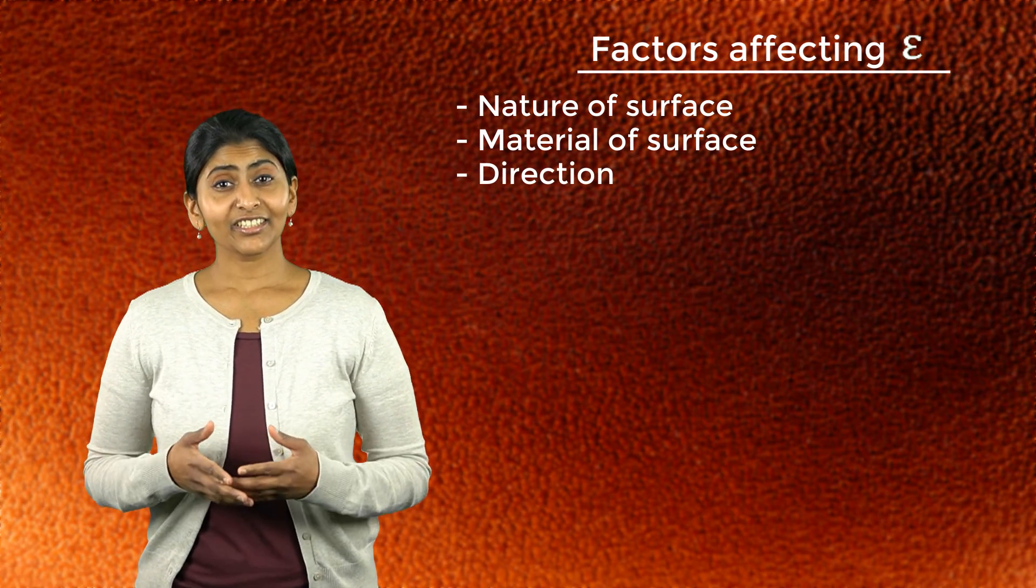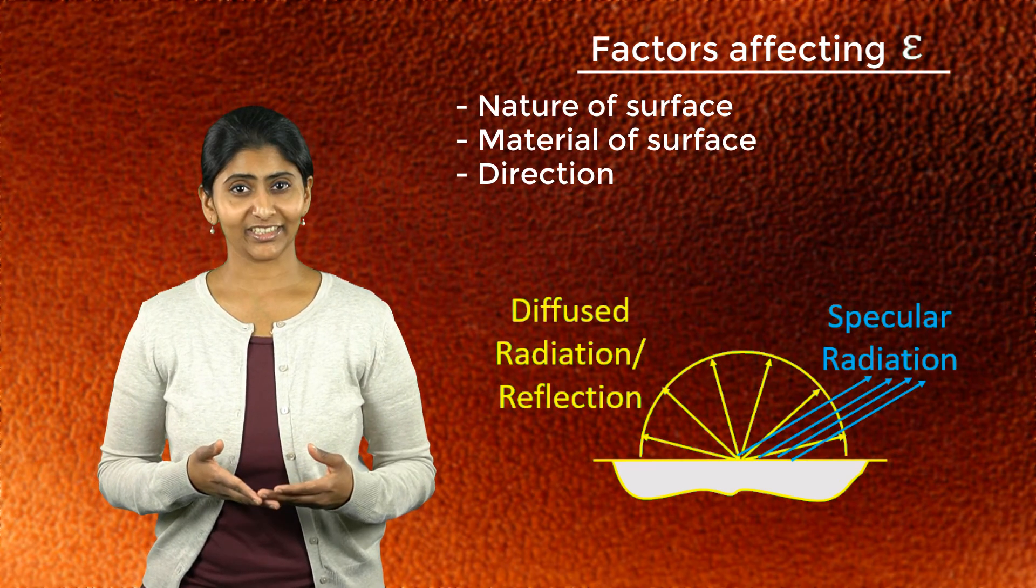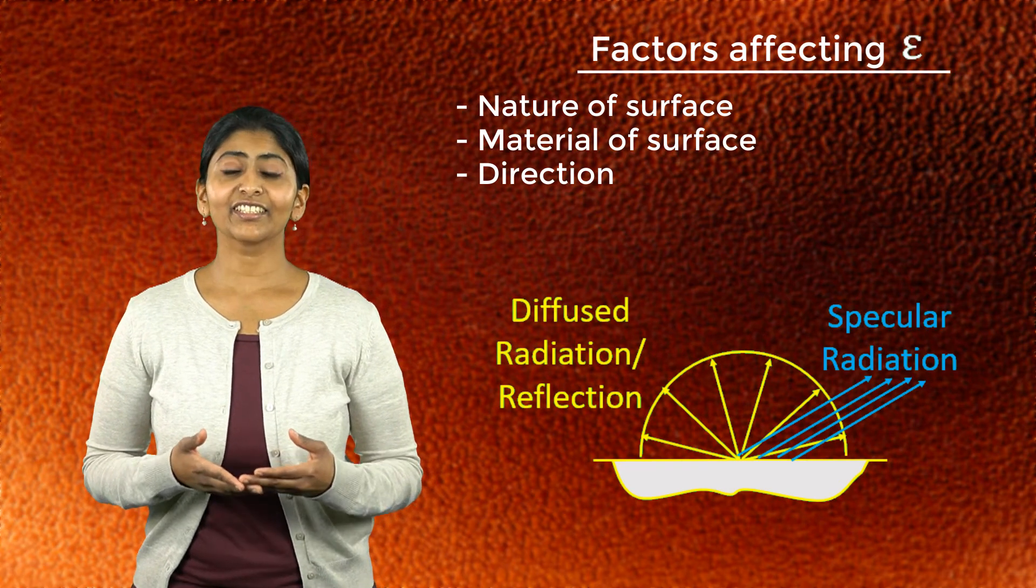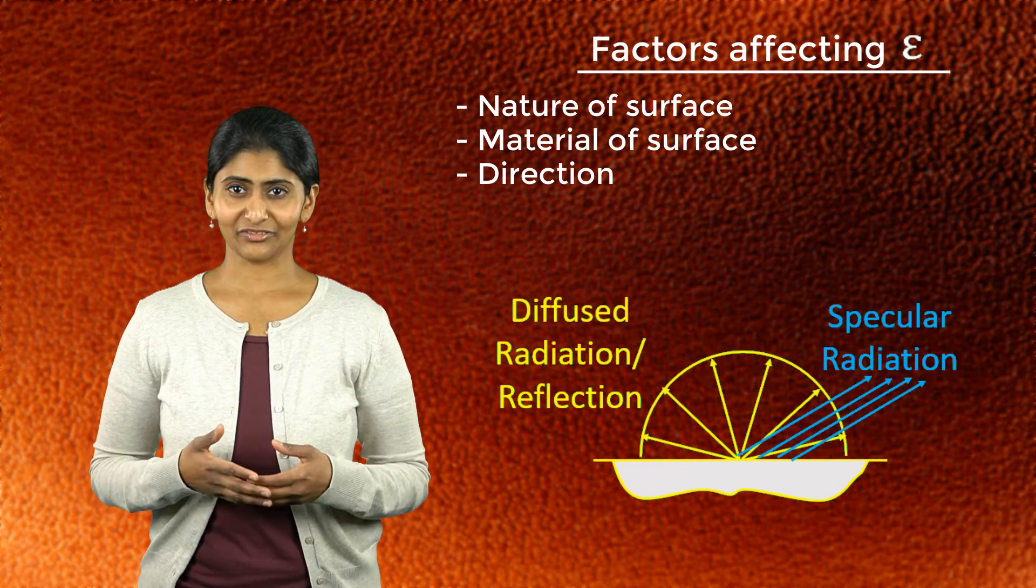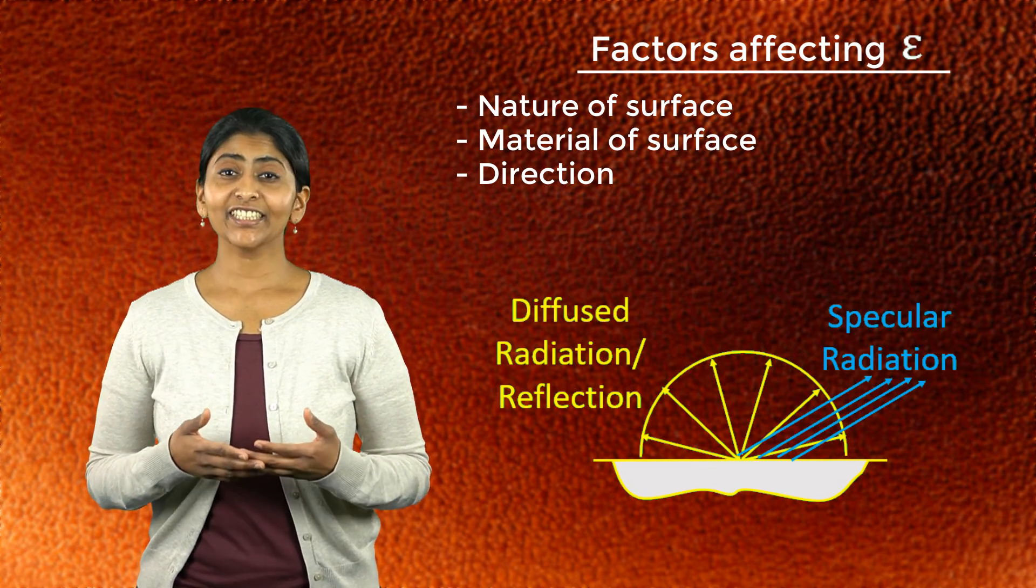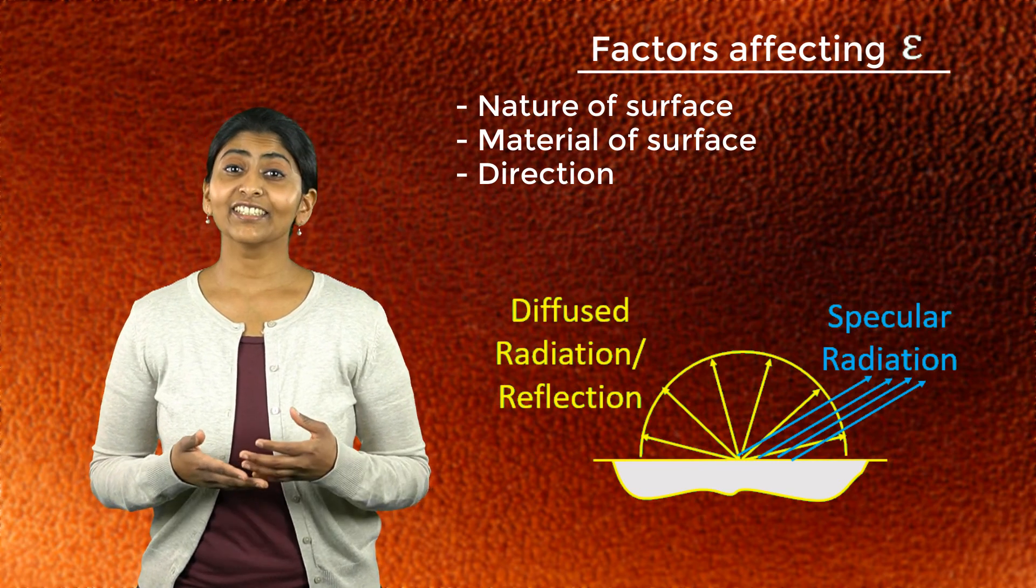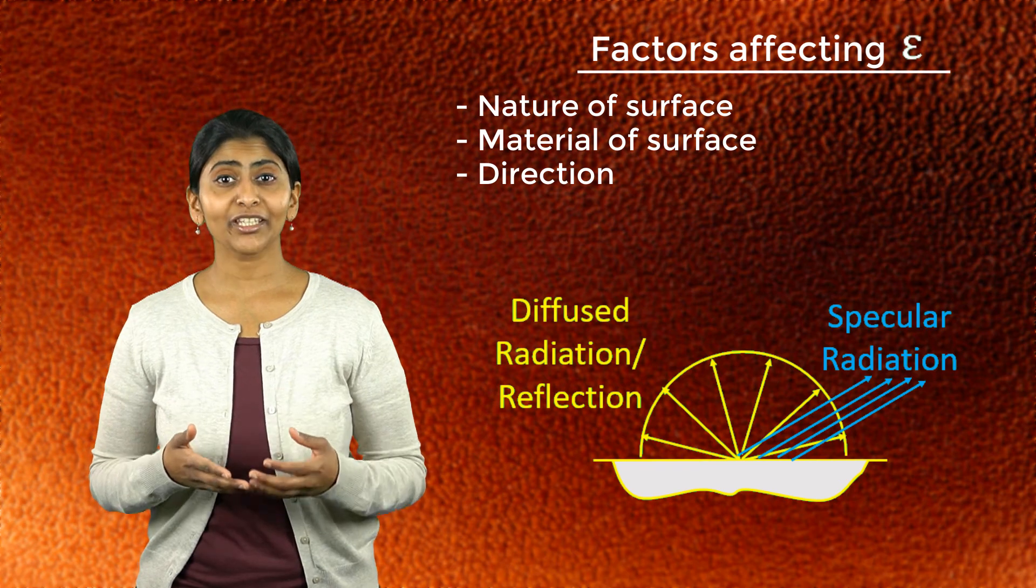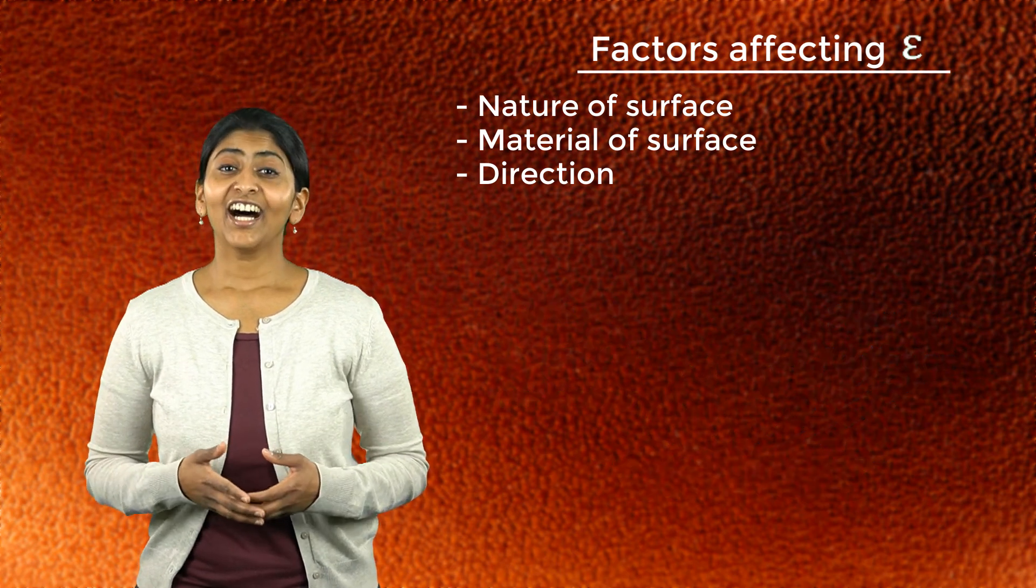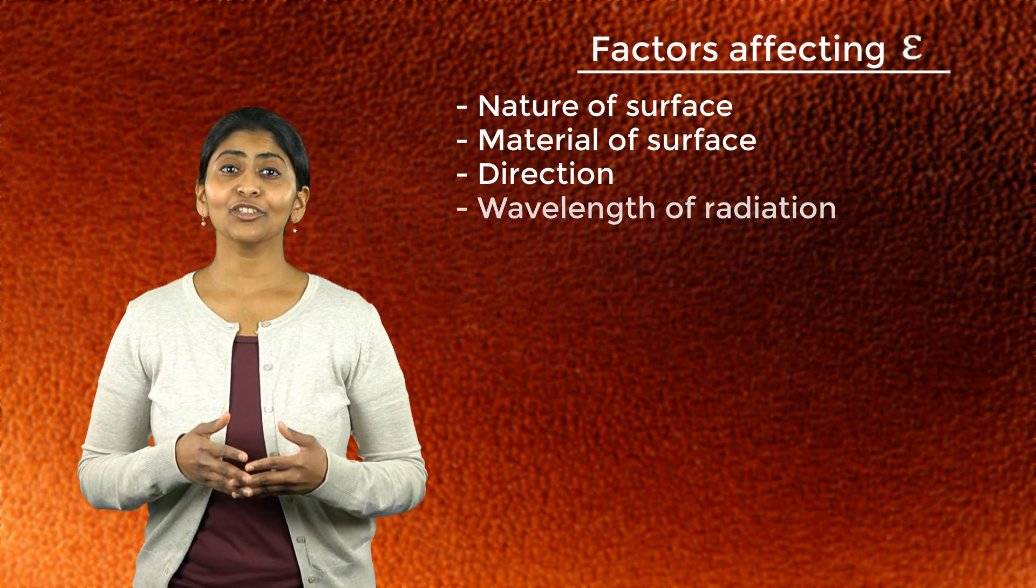In addition, emissivity may also depend on the direction. If a surface emits the same amount of radiation in different directions, then the surface is known as a diffuse surface. On the other hand, if the radiation emitted by a surface changes with direction, then the surface is known as specular surface.